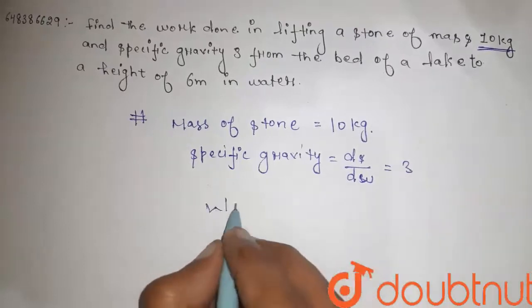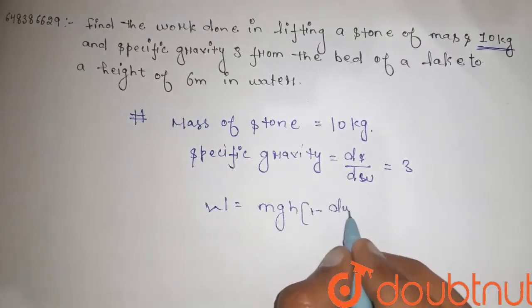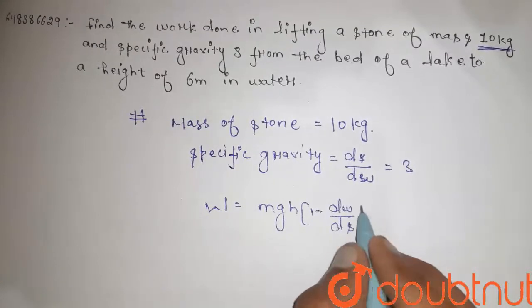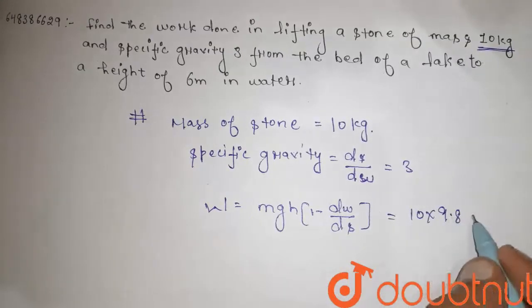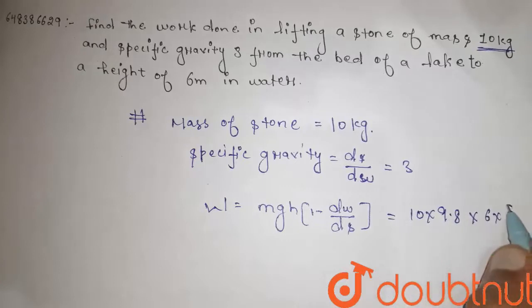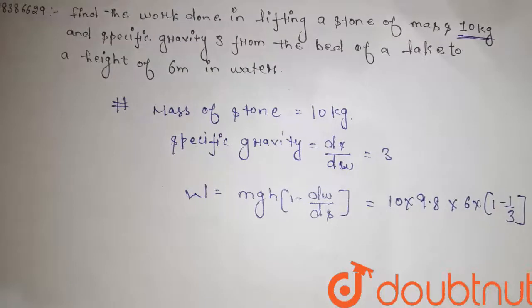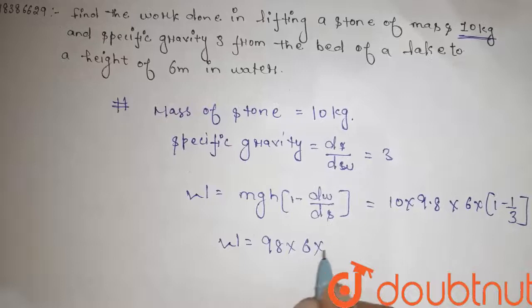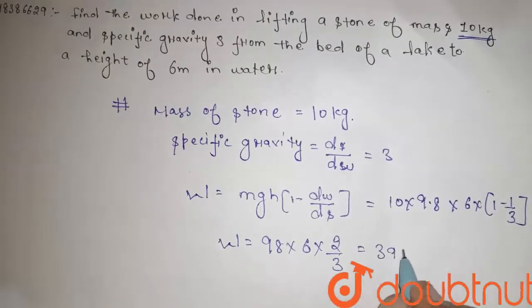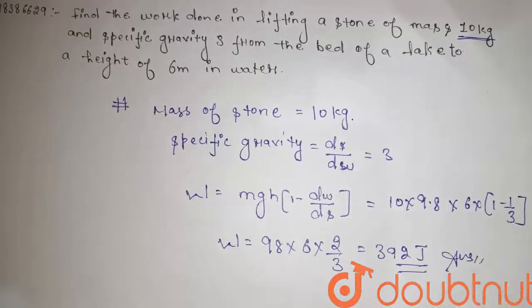So work done is equal to mgh(1 - dw/ds) which is 10 × 9.8 × 6 × (1 - 1/3). So guys, the work done is 98 × 6 × 2/3 that would be 392 joules. This is the final answer. Thank you.